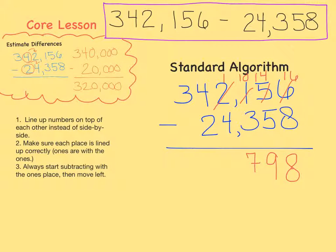Now let's subtract the thousands place. We can't take 4 away from 1. Let's regroup. 11 minus 4 equals 7.